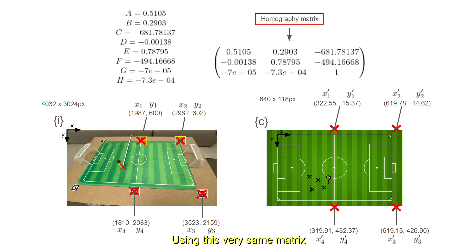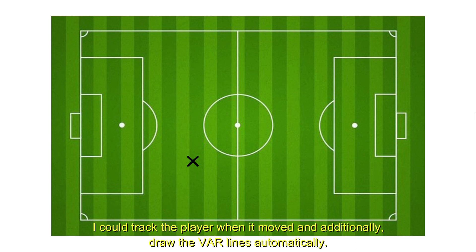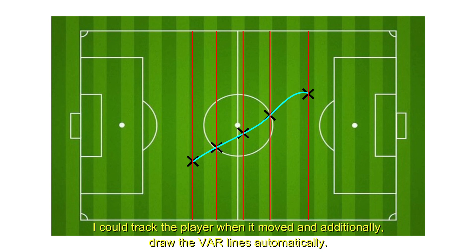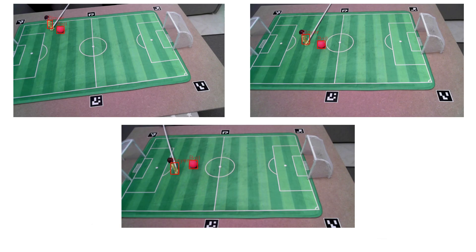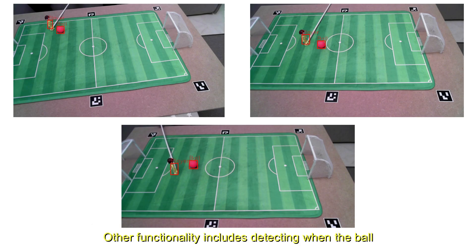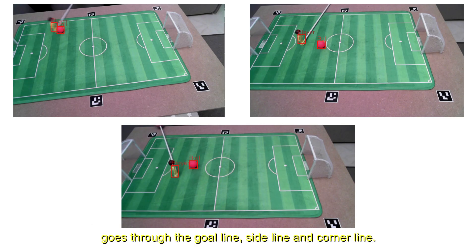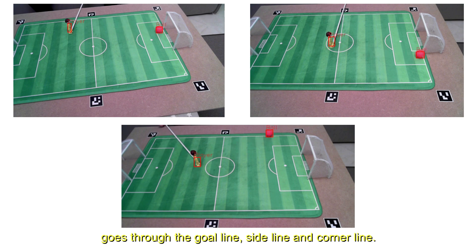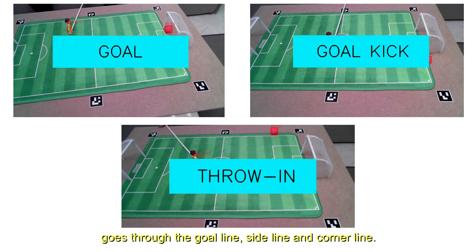Using this very same matrix, I could track the player when it moved, and additionally, draw the VAR lines automatically. Other functionality includes detecting when the ball goes through the goal line, sideline, and corner line.